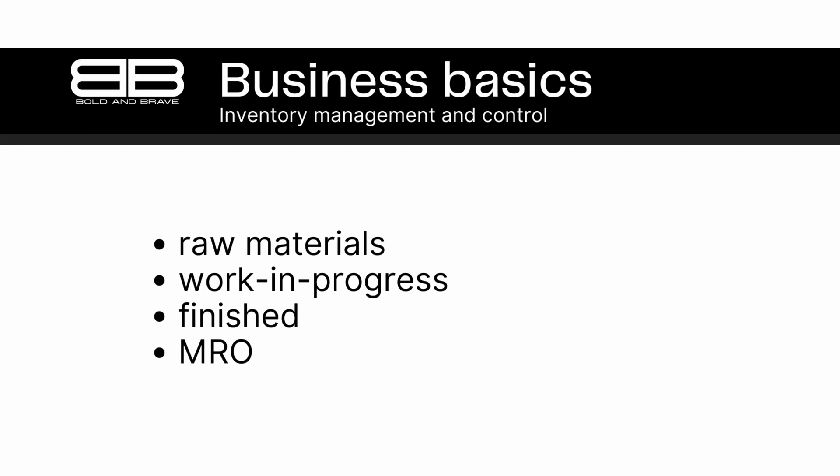Finally, there is maintenance, repair, and operations, or MRO, inventory, which includes items needed to keep a business running smoothly. These could include things like office supplies, cleaning products, and equipment repair parts. Managing MRO inventory involves ensuring that items are ordered and stocked in a way that supports business operations. By understanding the different types of inventory, businesses can develop strategies to manage each type effectively and ensure that they always have the products and supplies they need to succeed.